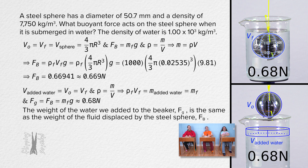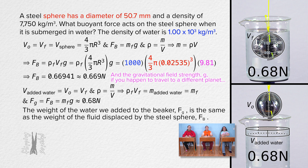But why did we never use the density of steel in any of our calculations? Because the only thing we calculated was the buoyant force, and the buoyant force does not change based on which object is displacing the fluid. The buoyant force only changes based on the density of the fluid displaced by the object and the volume of the fluid displaced.